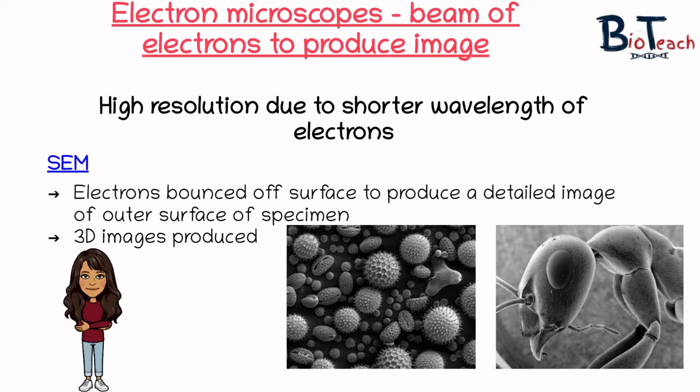There are two basic types of electron microscope: the scanning electron microscope, otherwise known as SEM, and the transmission electron microscope, or TEM. In SEMs, the electrons are bounced off the surface of an object to produce detailed images of the external appearance. It scans a sample with a beam of primary electrons which knocks electrons from the sample surface. These secondary electrons are picked up by a collector, amplified and transmitted onto a viewing screen or a photographic plate. This allows the production of a 3D image.